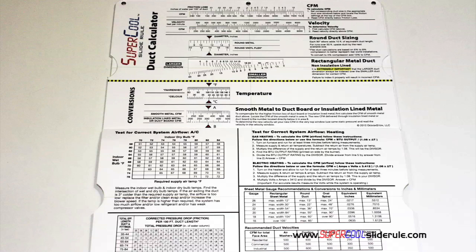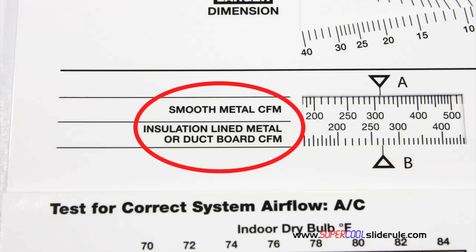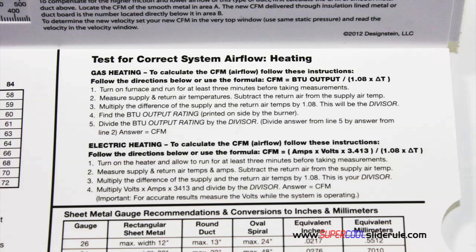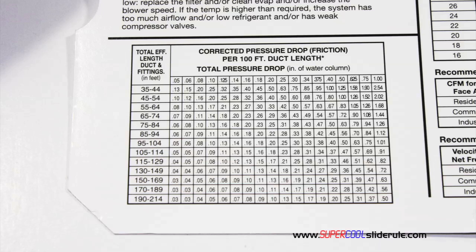Inside is packed with even more information. It performs sizing of both metal and flexible duct. It has the only direct reading conversion from smooth metal to insulation line metal we've ever seen. The majority of technicians have never been taught that if the insulation is on the inside of the ductwork, you cannot size it with a regular duct calculator. It has step-by-step directions for determining airflow through a gas furnace, electric furnace, or an air conditioning unit. It has pressure drop multipliers for ductwork, as well as recommended velocities.